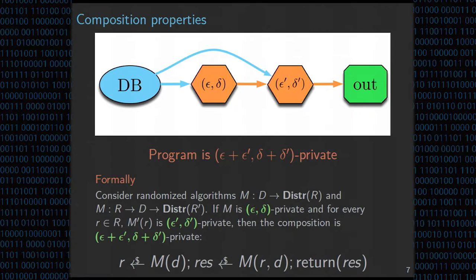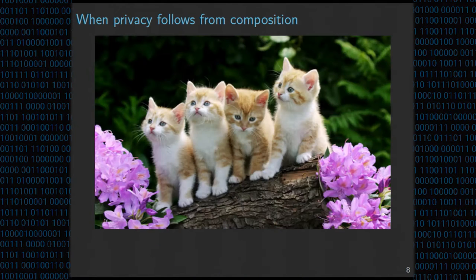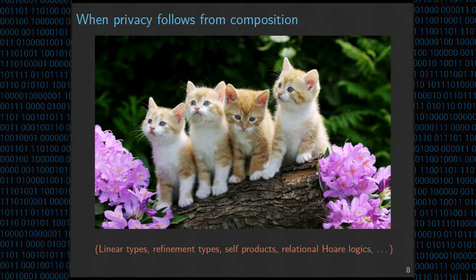This composition property makes it a lot easier to analyze private algorithms, because you can imagine having a big algorithm, breaking it down into smaller pieces, analyzing each piece separately, and then adding up all the epsilons and deltas. To summarize existing technologies: they all work quite well when the privacy proof follows from composition. There have been many approaches using techniques like linear types or refinement types, and these all work well when the privacy proof follows by composition.